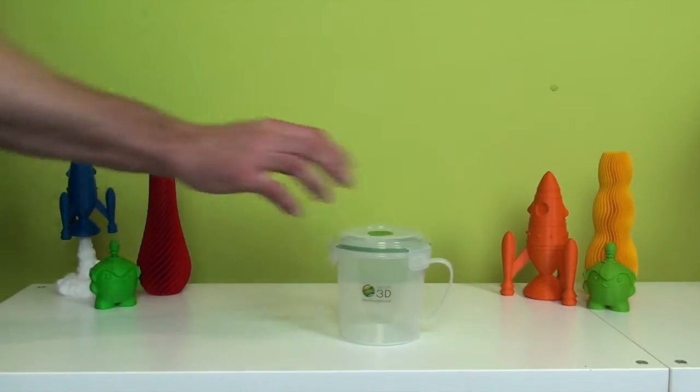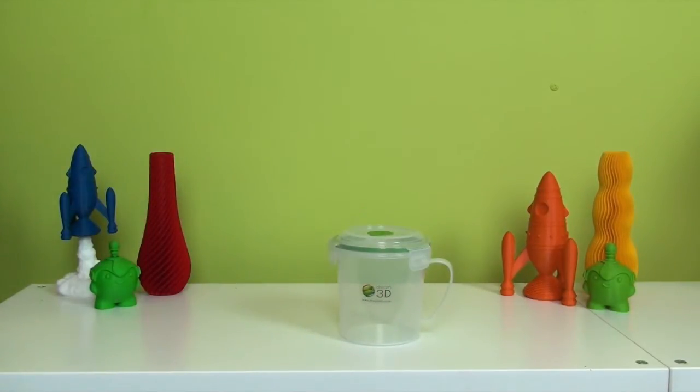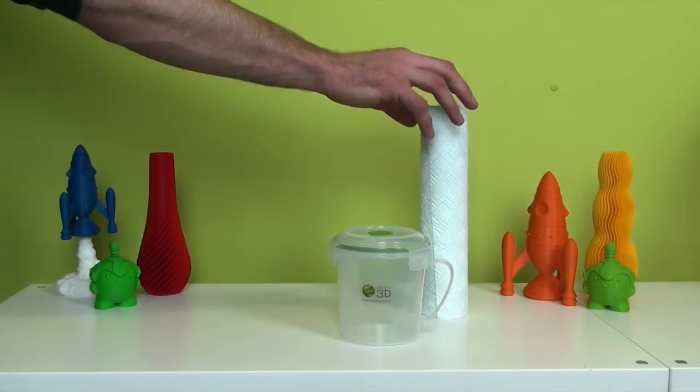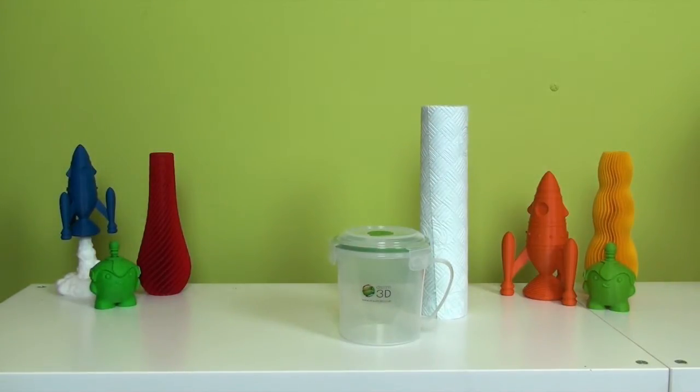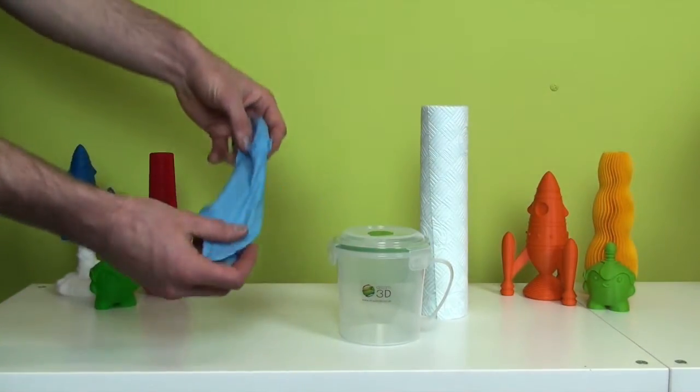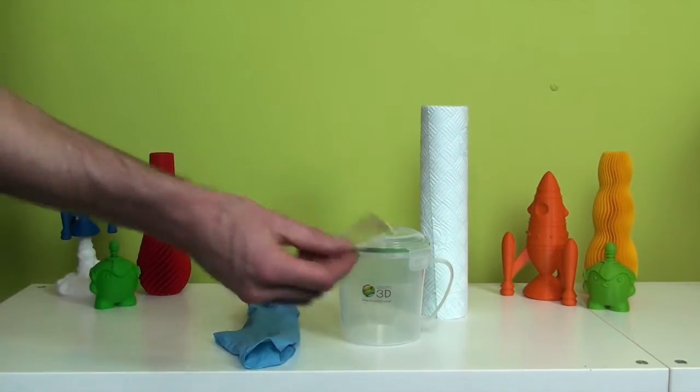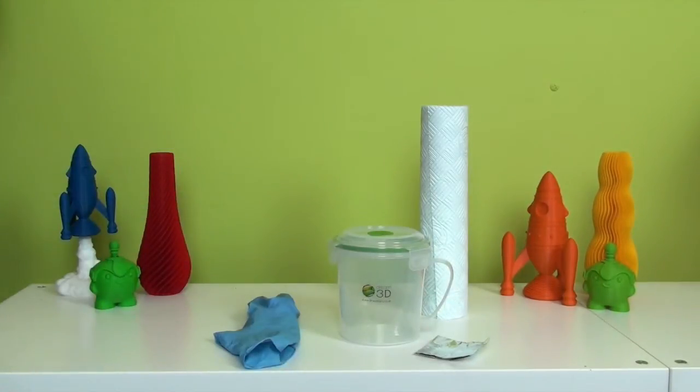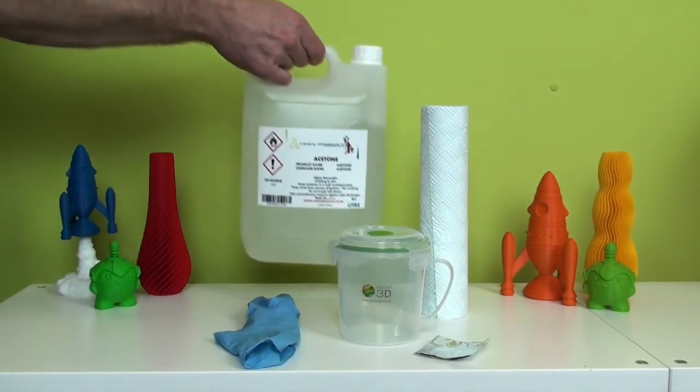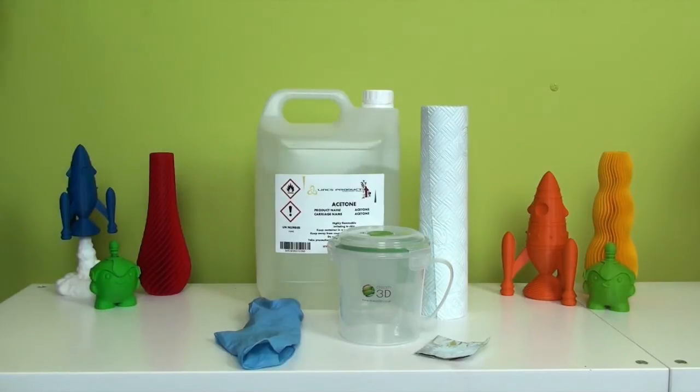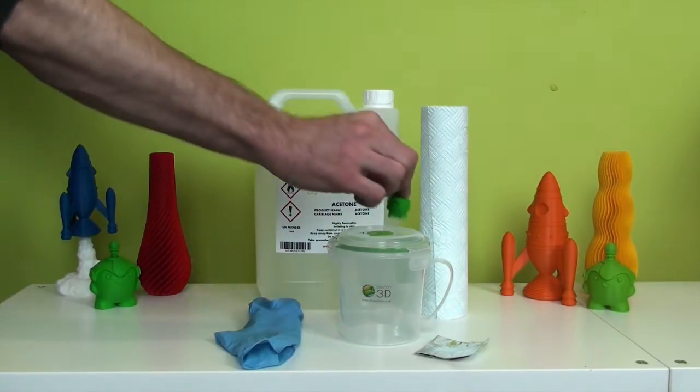Okay, so here's a list of things you'll need: one polypropylene container which is airtight, some kitchen towel, rubber gloves, some tin foil, and of course the acetone itself and the print.